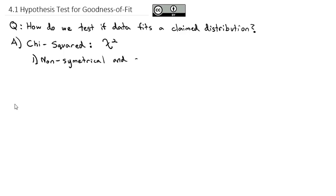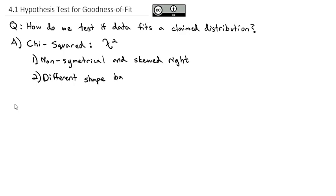The chi-squared distribution has a few key characteristics. It is a non-symmetrical distribution and it is skewed right. Unlike the normal and t-distribution, which are perfectly symmetrical, the chi-squared is skewed right. In fact, the shape itself varies based on the degrees of freedom — there is a different shape for each number of degrees of freedom.